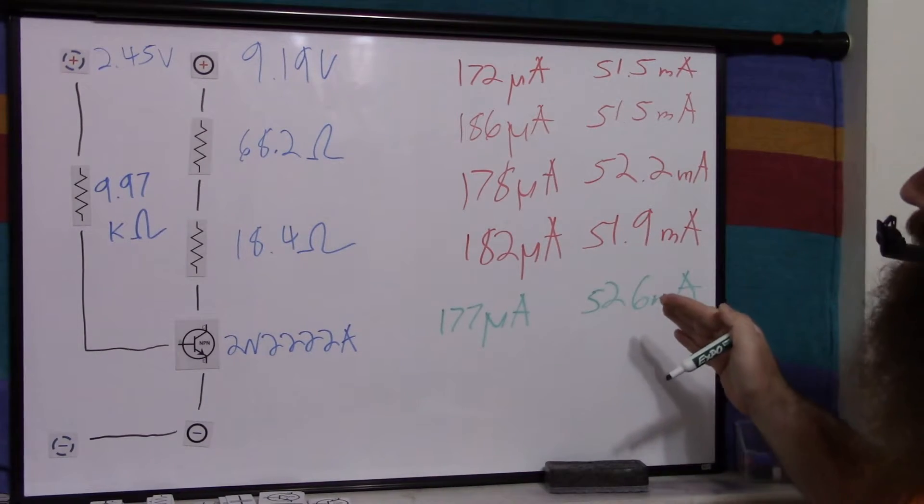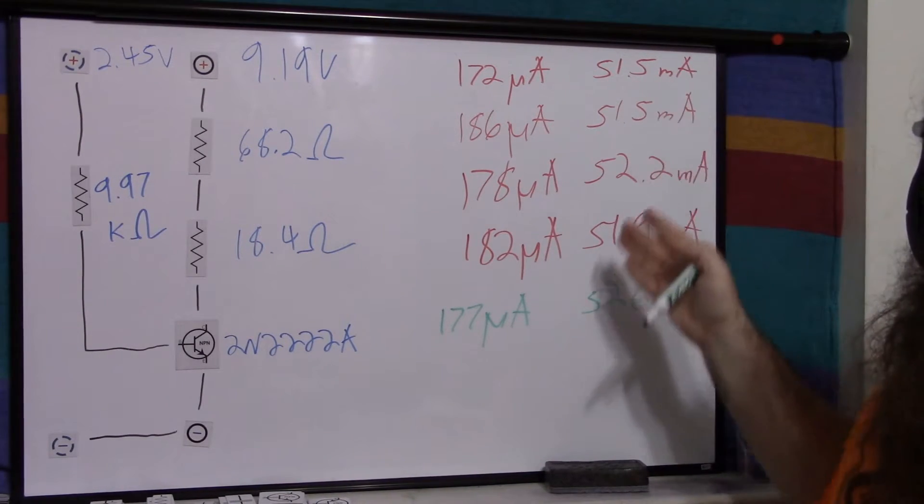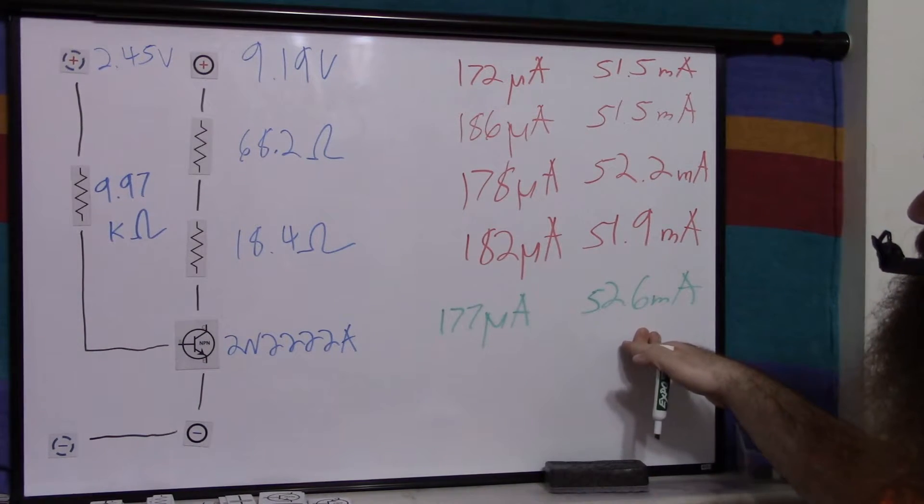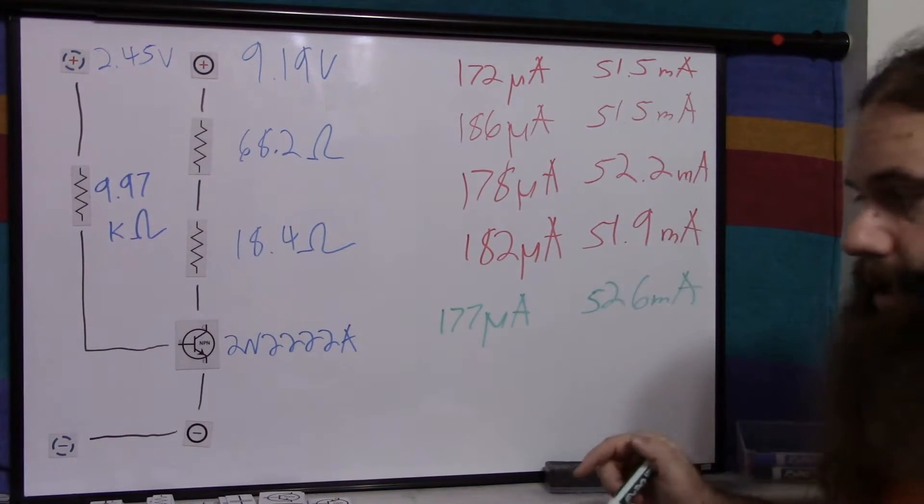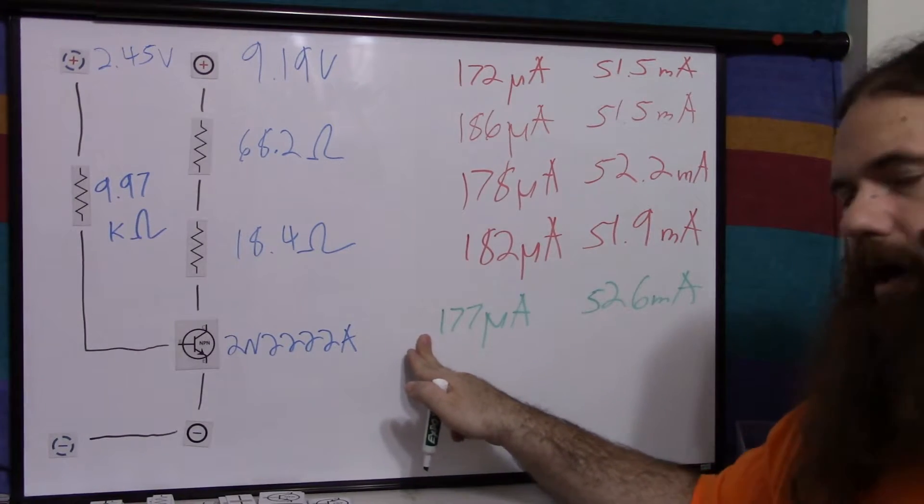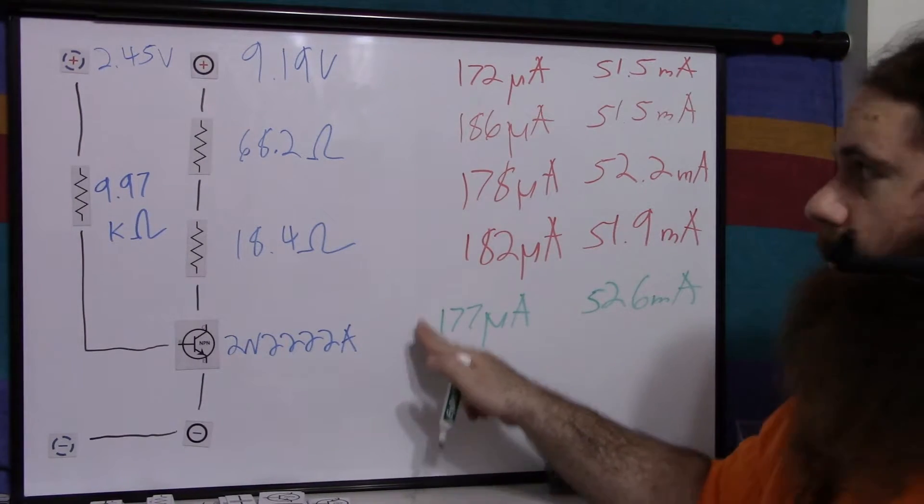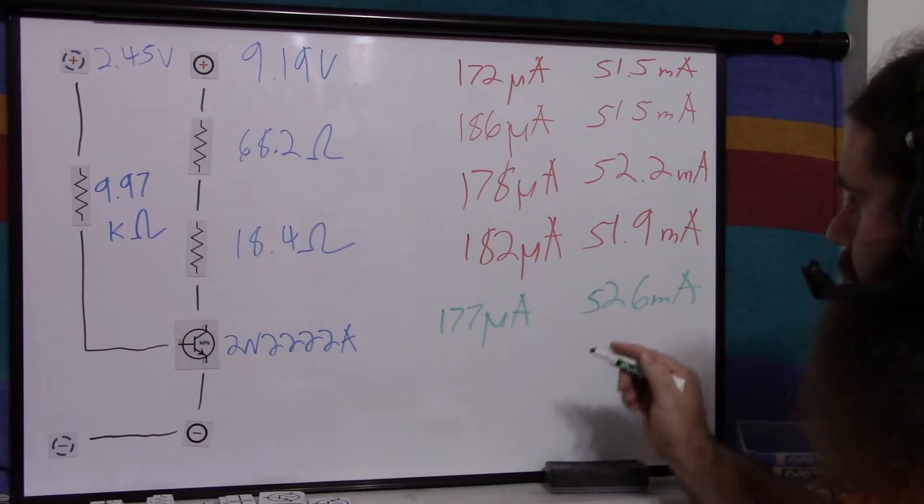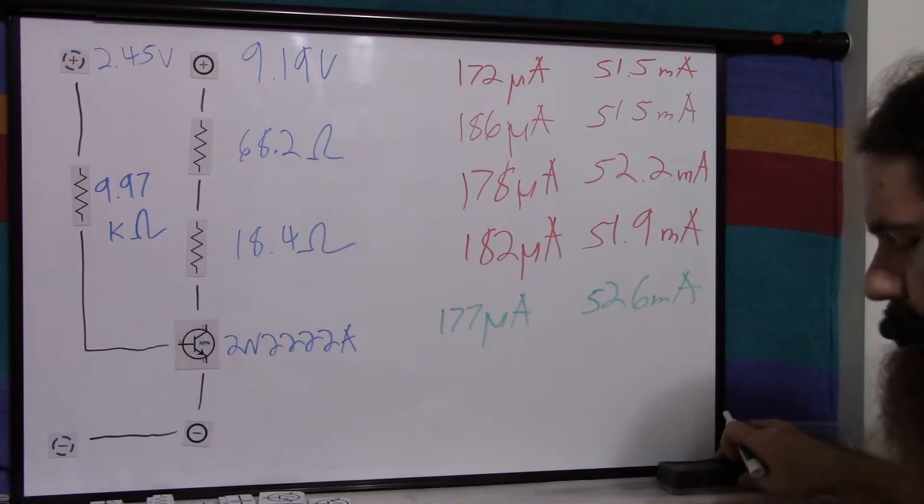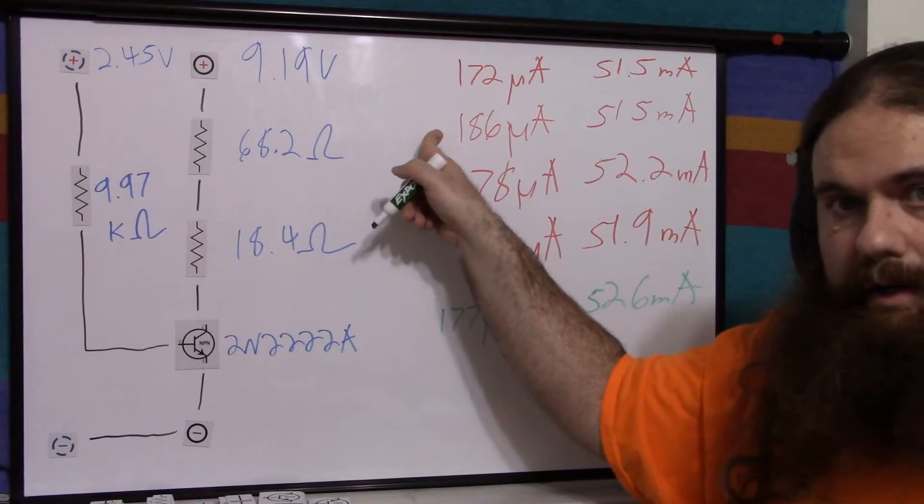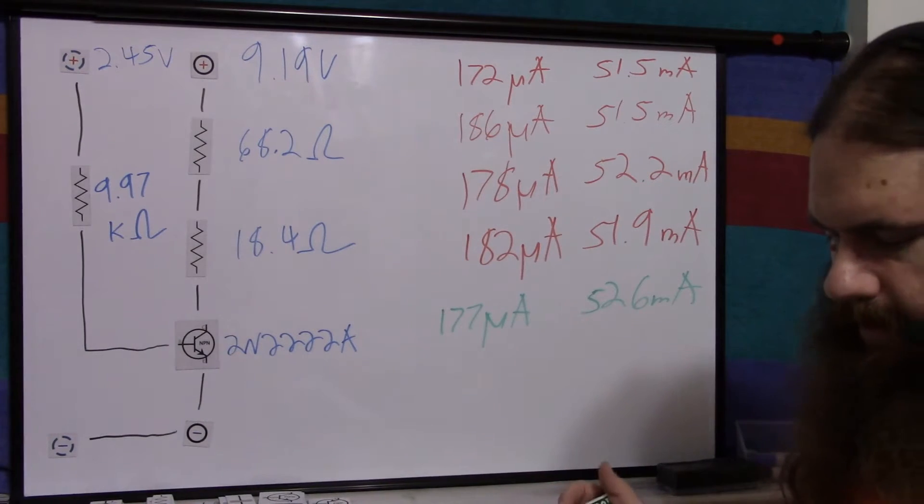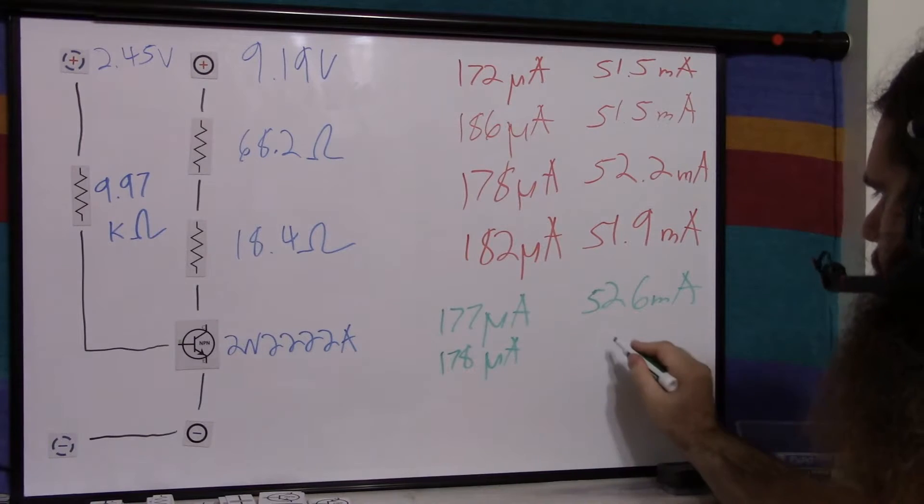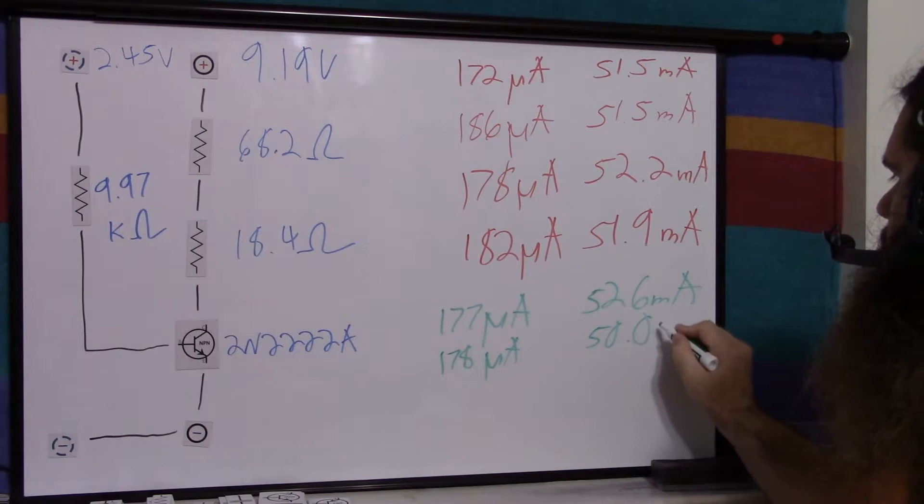I got 177 microamps base current with 52.6 milliamps collector current. Now you can see we're in the same ballpark. We're getting around 51, 52-ish here and around 180-ish here. But that's already pretty weird considering how close it was there. We're only off by 5 microamps. 5 microamps here. And it's stabilized to the same temperature. We're getting about the same current so it's about the same temperature. And yet we have that variance. But it gets worse. This one here, the one that was the same with a higher base current, ended up being 178 microamps and 50.0 milliamps.